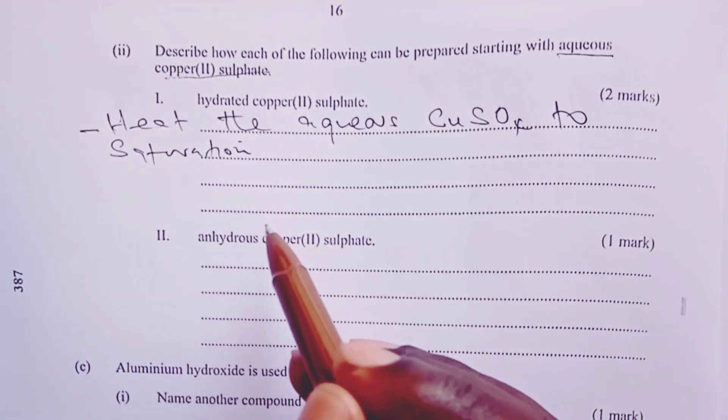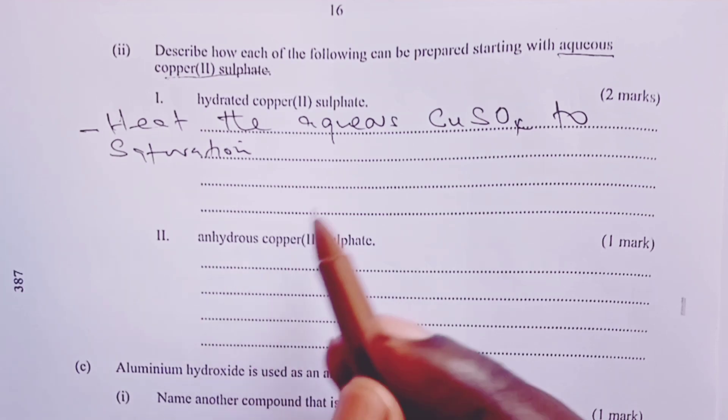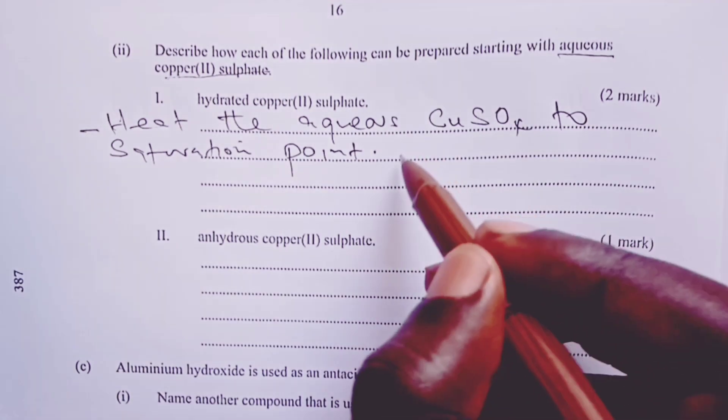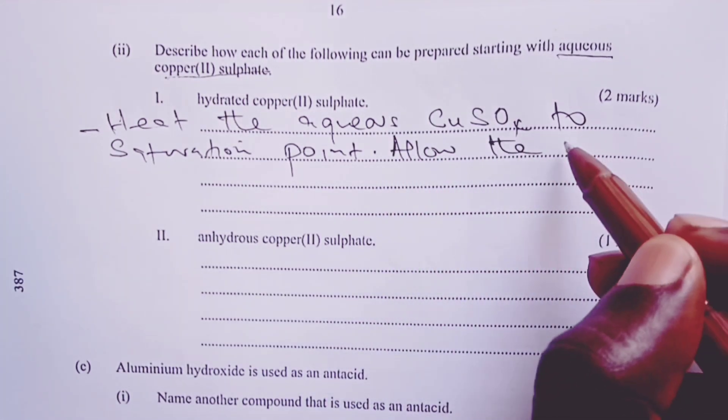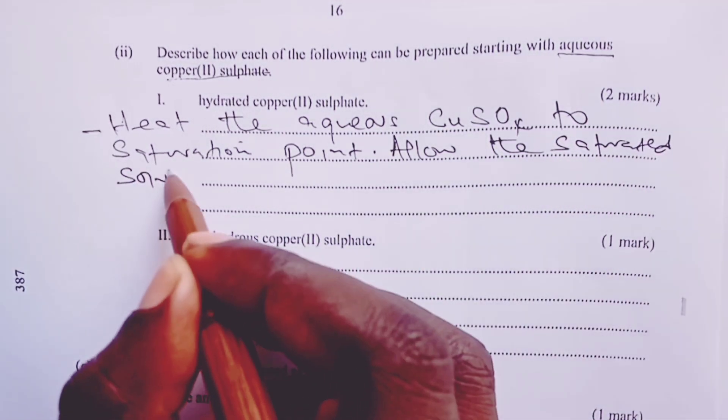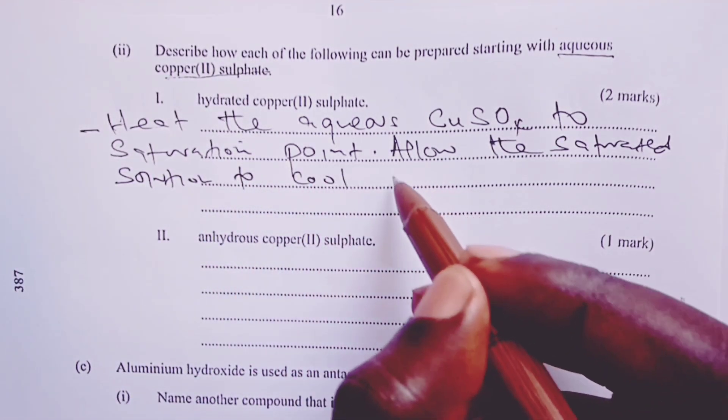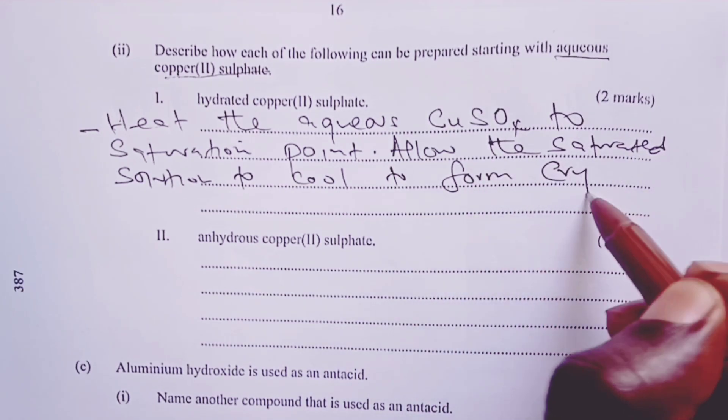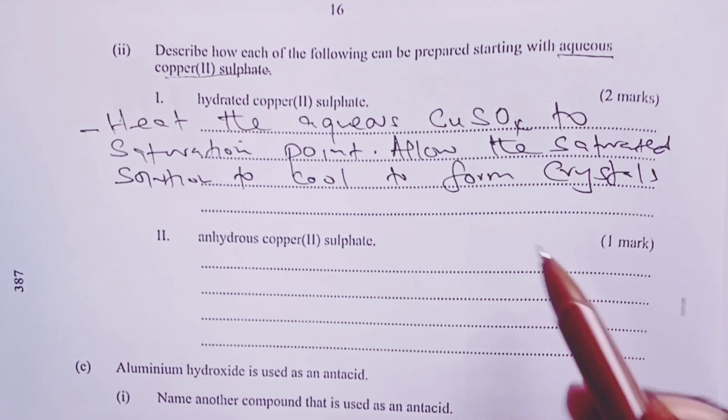In order to get hydrated copper(II) sulfate, we shall heat the aqueous copper(II) sulfate to saturation point. Once we reach the point, we shall allow the saturated solution to cool. And when we do this, we are able to get our crystals of hydrated copper(II) sulfate for two marks.